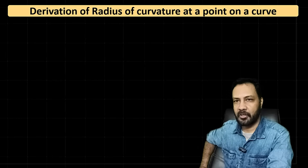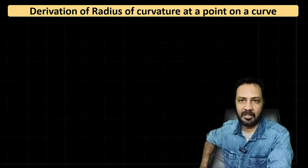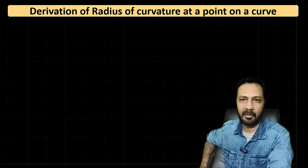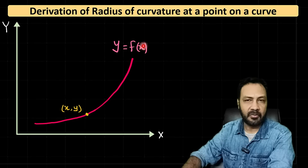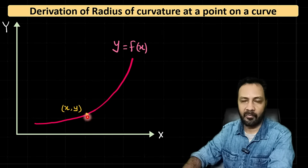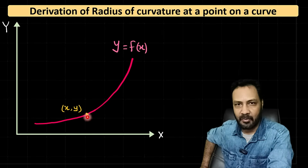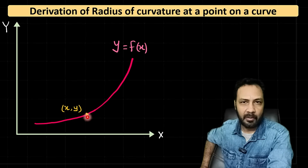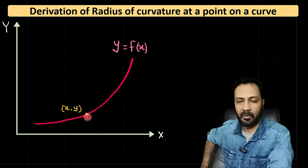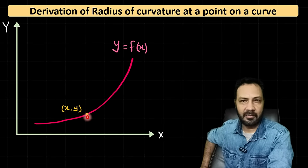Welcome to Quantum Guru. In this video I am going to derive the expression for the radius of curvature at a point on a curve y = f(x). At a point (x, y), the radius of curvature is the radius of the best fitting circle that can fit through that point on the curve.